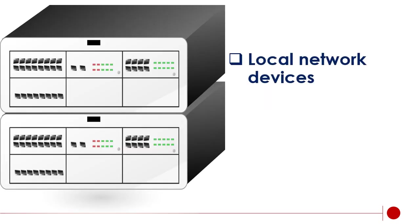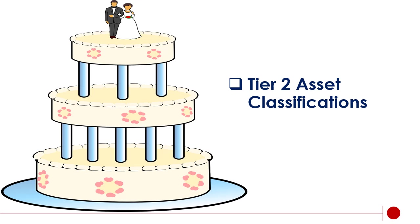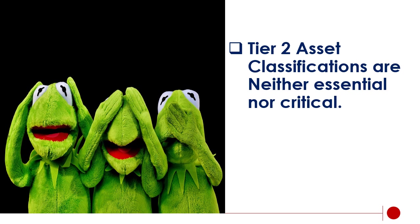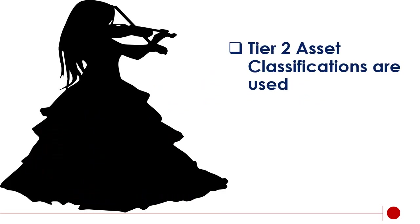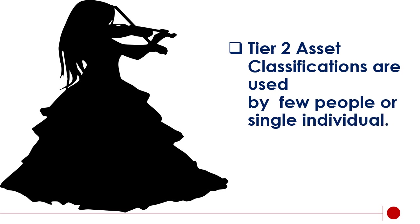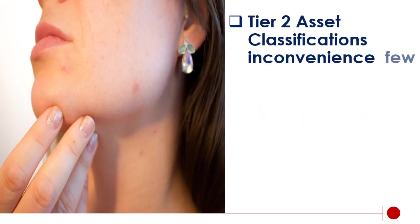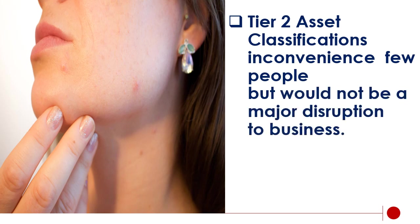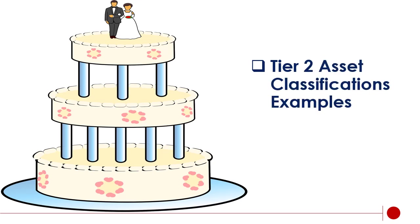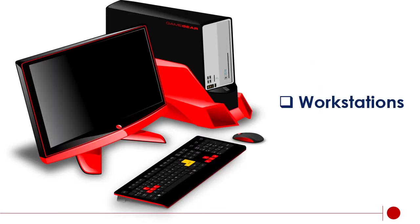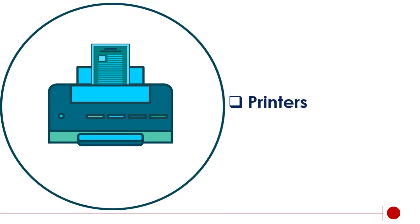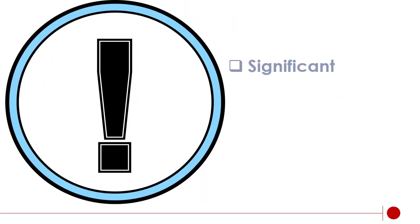Tier 2 asset classifications are neither essential nor critical. They are used by few people or a single individual, and an inconvenience to few people but would not be a major disruption to business. Examples include workstations, laptops, mobile phones and tablets, printers, and desk phones.